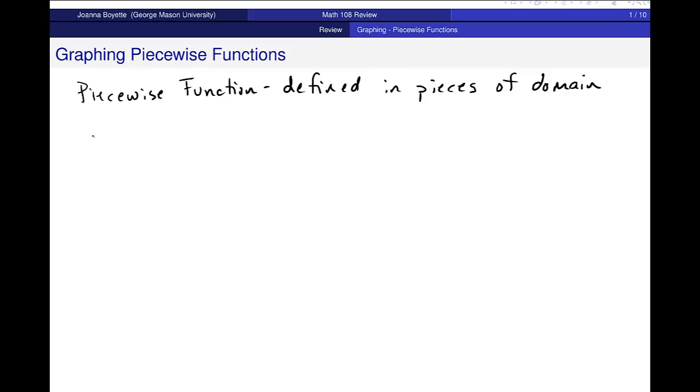For example, here's a function: f(t) equals 3 if t is less than negative 5, t squared when negative 5 is less than or equal to t is less than or equal to 5, and t plus 1 for t greater than 5. This is what I mean by a function that's defined in pieces. I have different definitions on different parts of the domain.